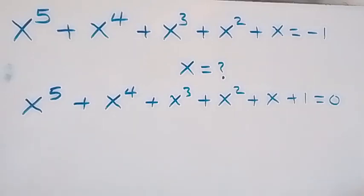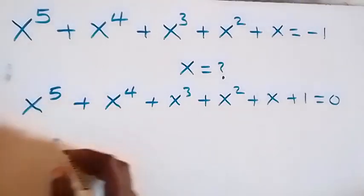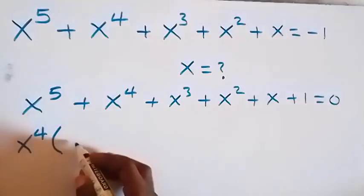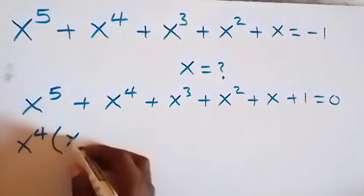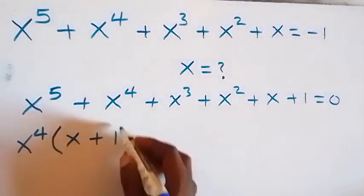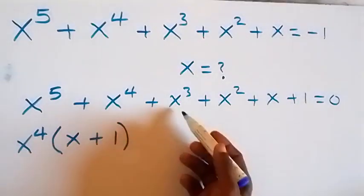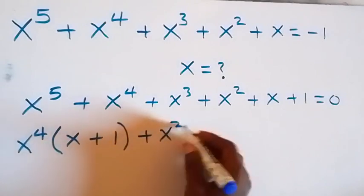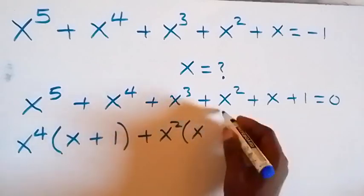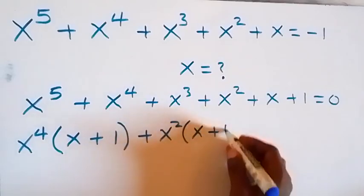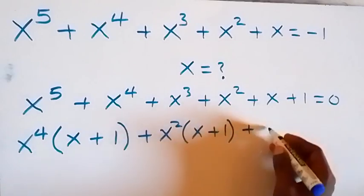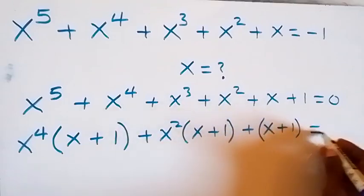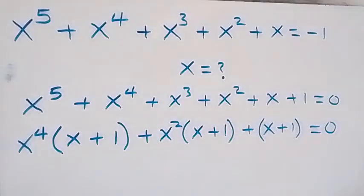And from here, let's factor x raised to power 4 out here. So we have x raised to power 4 into bracket — what's left here is x, then plus 1. Also from these two terms, let's factor x squared out. Then what will be left here will be x, then plus 1. Then we can group this x plus 1 together into a bracket, and equals to 0.